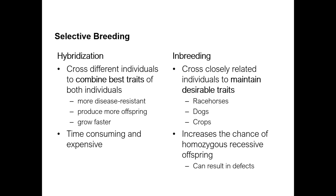Maintaining desirable traits through inbreeding — some examples would be a line of racehorses that are champions. You want the progeny to also be champion horses, so you inbreed those horses to always have fast, champion horses. Same with dogs — if you want a desired breed, you inbreed to maintain those traits. You can do this with crops too, so that crops grow faster and are more disease and drought resistant.